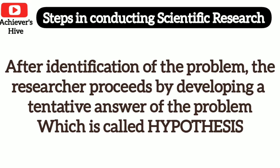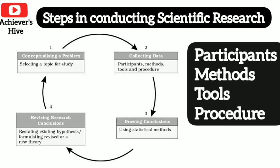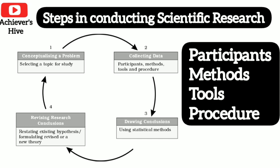The next step is to conduct scientific research — collecting the data. As you can see in this picture, participants, methods, tools and procedures are all part of data collection. In this second step we take it to research. We take many decisions: we decide who would be the participants in the study, what methods we will use to collect data, and what tools and procedures we will follow.